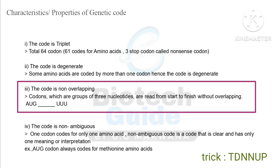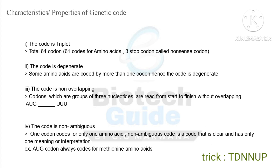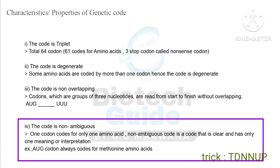Third, the code is non-overlapping, meaning codons — which are groups of three nucleotides — are read from start to finish without overlapping. So if you are reading AUG, then AUG does not overlap with UUG; it is read on a straight line. Fourth, the code is non-ambiguous, meaning one codon codes for only one amino acid.